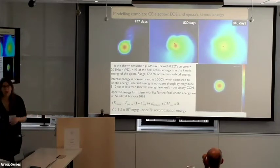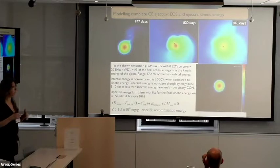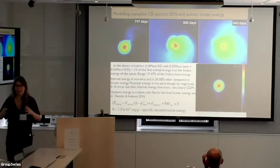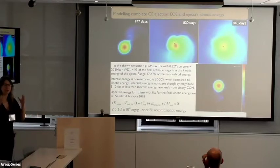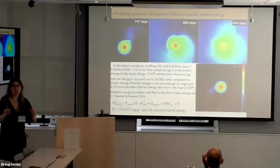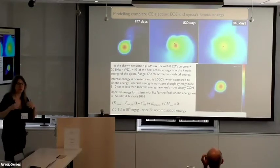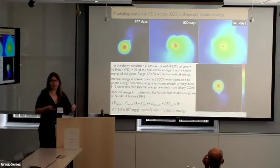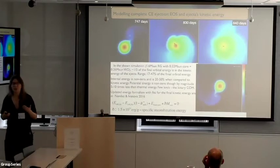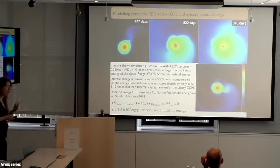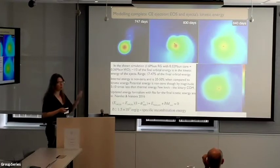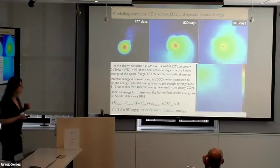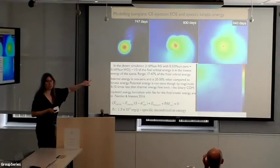My group made simulations for common envelope evolution with a full complete ejection. What we found is the energy the ejecta takes away at infinity. The energy formalism implies that the energy of the ejecta at infinity is zero — basically a perfect fine-tuning which nature will never give you. What we found instead is that when the ejecta is far away, it carries between 20 and 50 percent of the final orbital energy. So the energy it takes away at infinity is not negligible, and you can say it changes your alpha by roughly a factor of two.